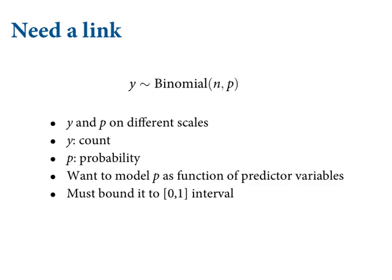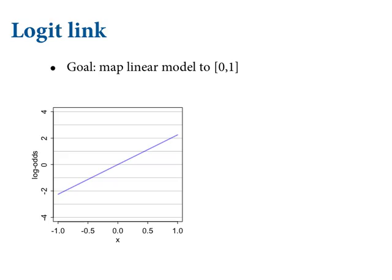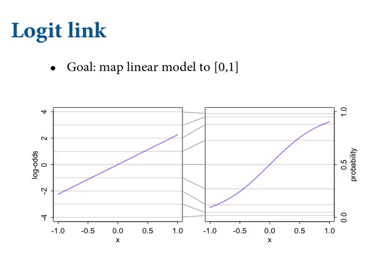We're going to plug a linear model in and attach it to p. We need a link function. On the horizontal axis of this graph I've got some predictor variable X. We're going to attach some slope to it and it's going to be linearly related on a scale called the log odds. What are log odds? The odds are p over (1 minus p), and the log odds is the log of that. This is the conventional link. There's a very nice mapping onto the probability scale where X is linear on the log odds scale, so our whole linear model is defined on the log odds scale and will be constrained to the 0-1 probability interval on the outcome scale.